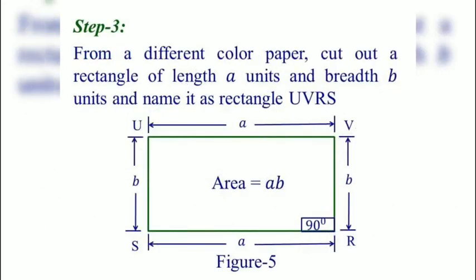Next step: From a different color paper, cut out a rectangle of length A units and breadth B units and name it rectangle UVRS. Here in figure 5, UVRS is a rectangle having length A units and breadth B units, and its area is AB square units.